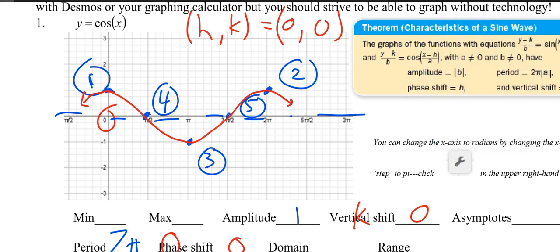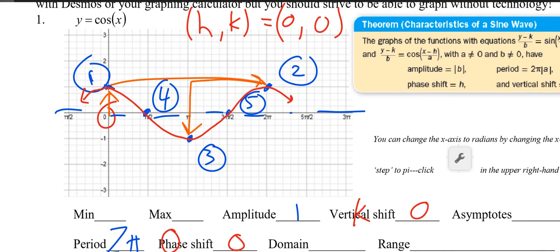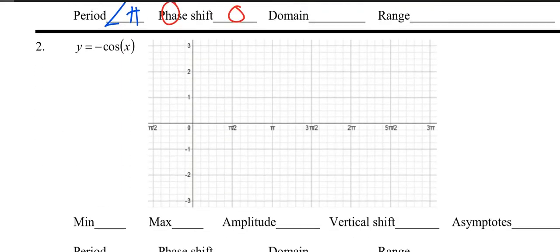So once you find your HK, you go up to find the first point, over to find the second point, halfway in the middle and down to find the third point. And of course we could probably identify all the other stuff, domain range, min, max, but that's going to be pretty similar to what you saw yesterday.